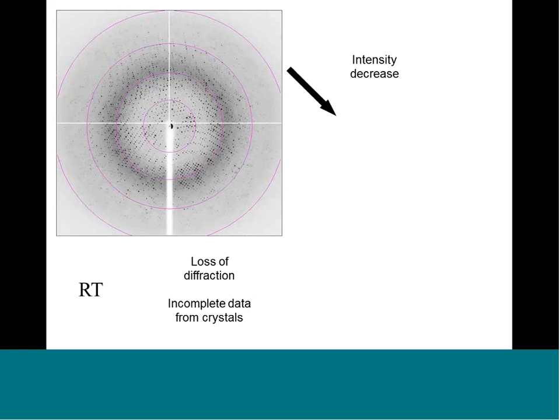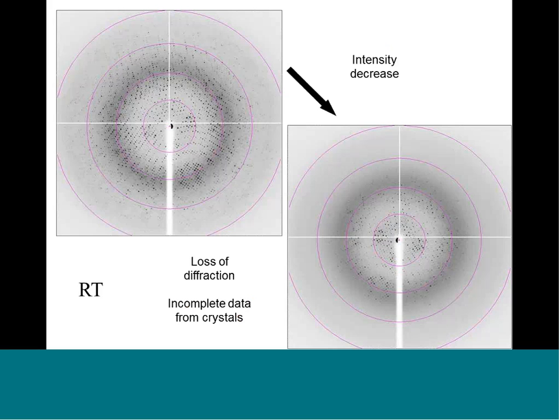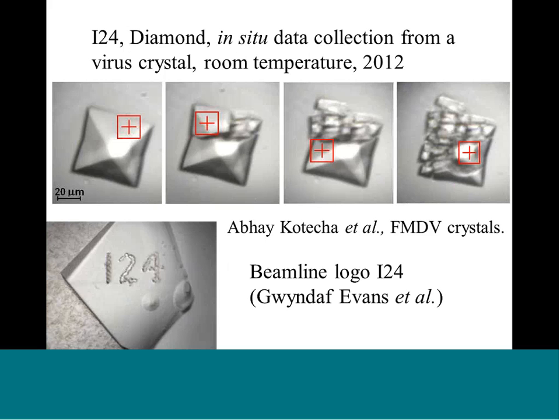At room temperature, we get a nice diffraction pattern at the beginning of our experiment. Within one dataset, or sometimes within three images, we see a loss of diffraction — we lose first the high resolution data at the edge of the image plate, and the other reflections will extend and the mosaicity will increase as the experiment proceeds. This nice picture was taken on I24, the microfocus beamline at Diamond, on a Foot-and-Mouth disease virus crystal from David Stewart's group.